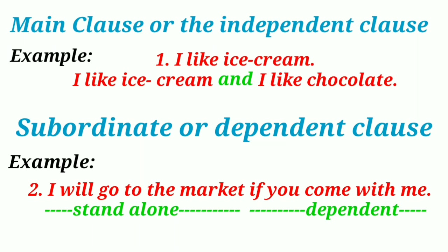Each sentence can be made of one independent clause, two independent clauses, or one independent and one dependent clause. When a sentence is made up of more than one clause, the clauses are joined by a conjunction. You will learn more about this in chapter 14.